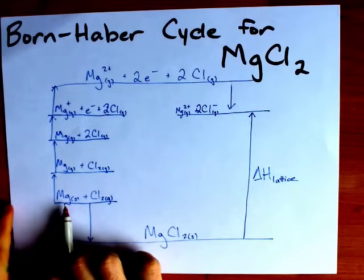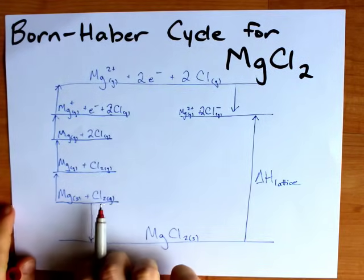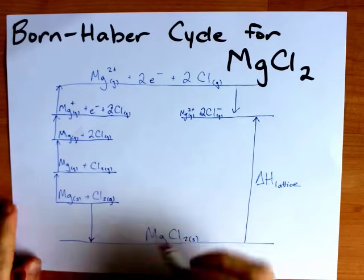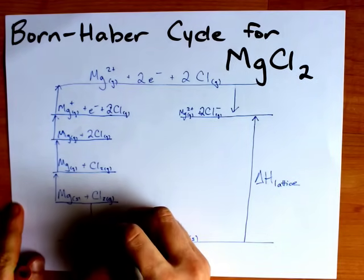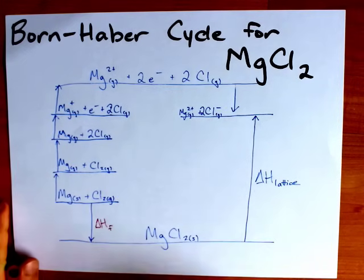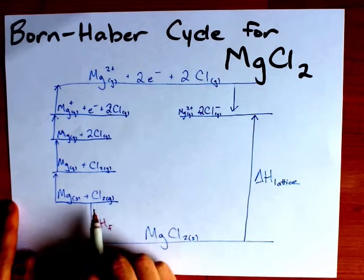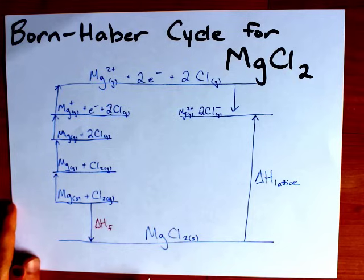Converting the elements in their pure form at standard state into an ionic compound, or into any compound really, is actually called the enthalpy of formation. That's ΔHf. ΔHf will always be found here. For an ionic compound, ΔHf is always negative, and so I have a down arrow representing that change.